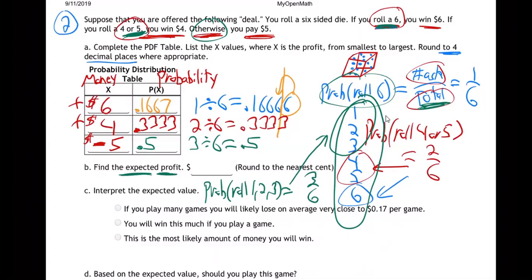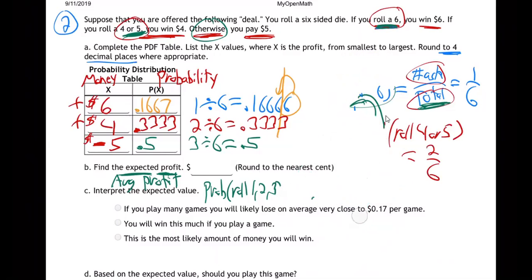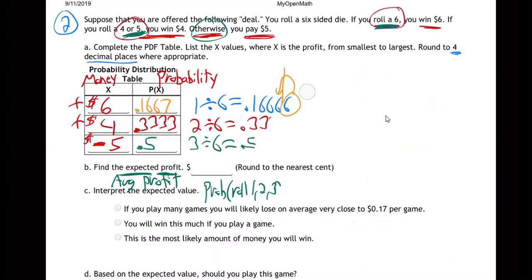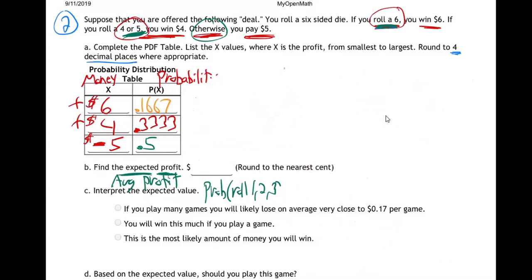So we did some of this last time. I felt like I showed you a difficult way to do that, and I want to make it easier. Let me show you how you calculate expected value. What expected value is, is average profit. In other words, when you play this game, on average, what's going to happen? Sometimes you win, sometimes you lose — sometimes you win $6, sometimes you win $4, sometimes you lose $5. What's going to happen on average?